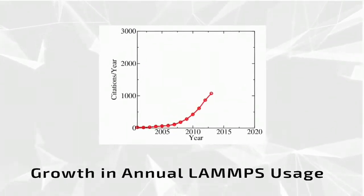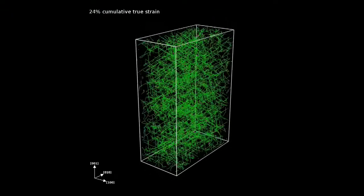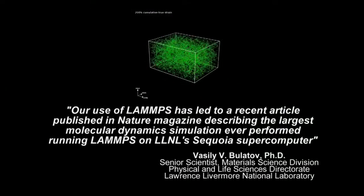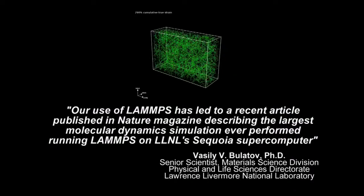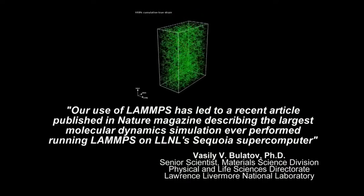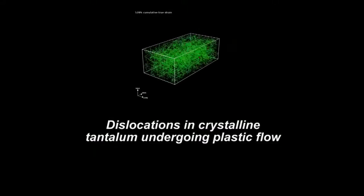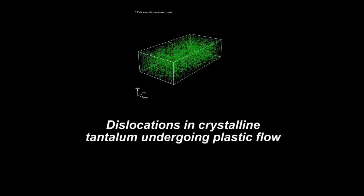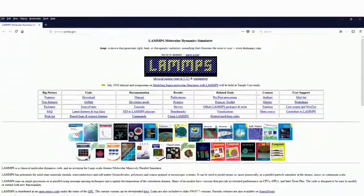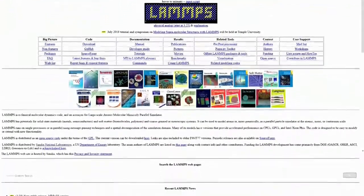That number is now more than 2,000 citations per year — so not only is it a large number, but it's actually growing very rapidly. For a billion-atom, billion time step calculation, a prominent scientist at Lawrence Livermore National Laboratory writes that their use of LAMPS led to a recent article published in Nature magazine describing the largest molecular dynamics simulation ever performed, running LAMPS on Livermore's Sequoia supercomputer. For certain types of problems, we really need to push the scale, both in terms of time scales and length scales, and that's where LAMPS really comes into its own. There are very few codes in the world that can work efficiently on those very large scales. It's not just our ideas and our coding that's in the code — it's hundreds of contributors from around the world that have made it into a more powerful package, and we each get to leverage each other's ideas and capabilities.